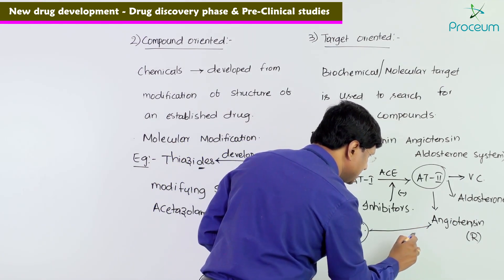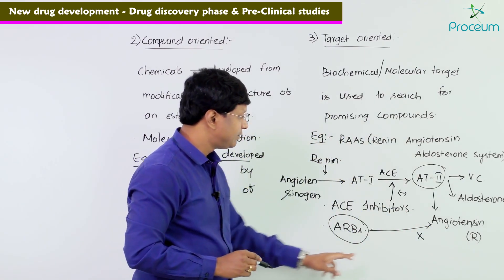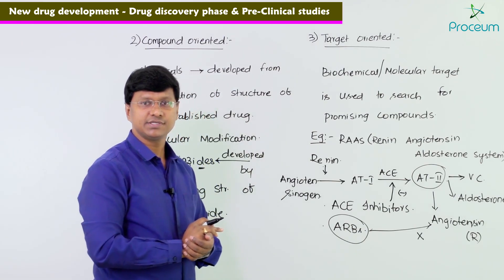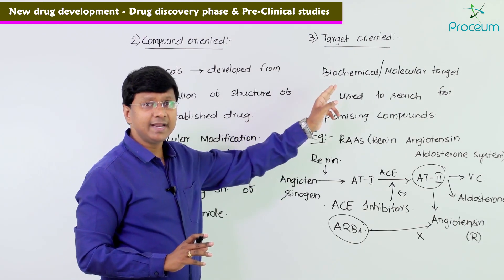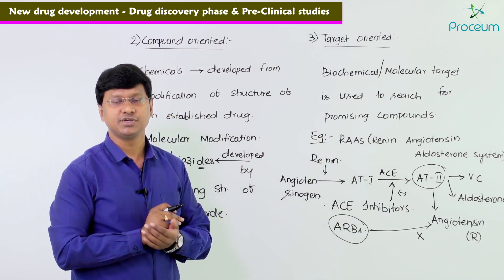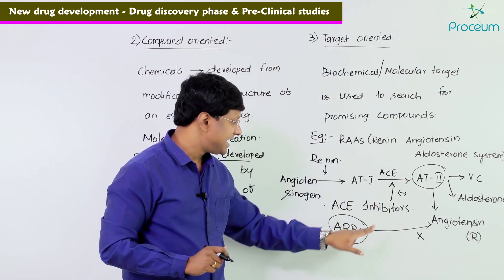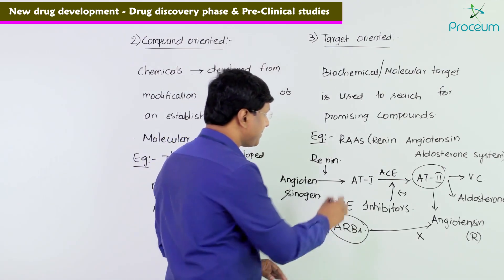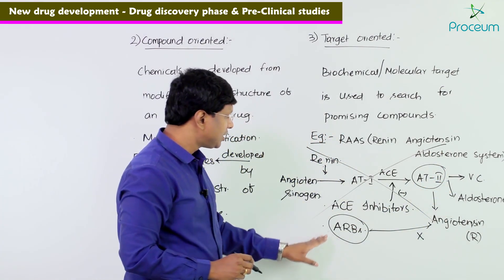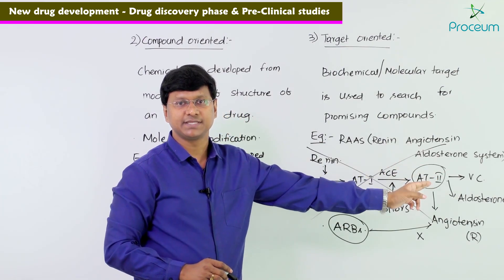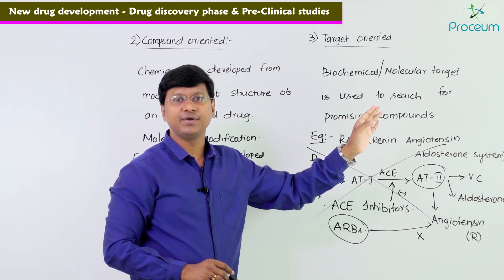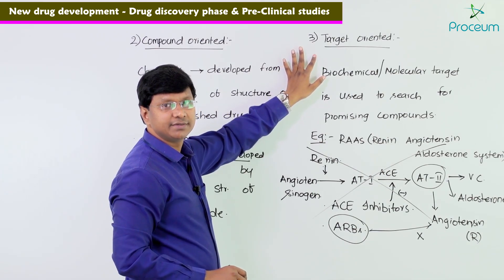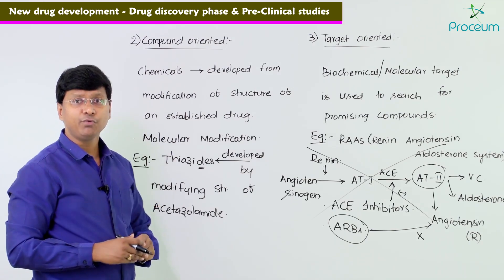ACE inhibitors and angiotensin receptor blockers (ARBs) were developed by forming compounds that can stop this RAS pathway. ACE inhibitors inhibit the angiotensin converting enzyme, while ARBs block the angiotensin receptors. These are examples of target-oriented drug development.